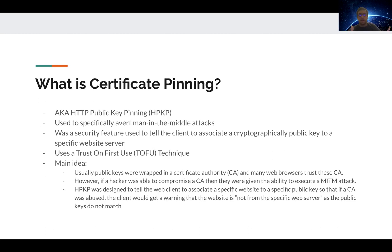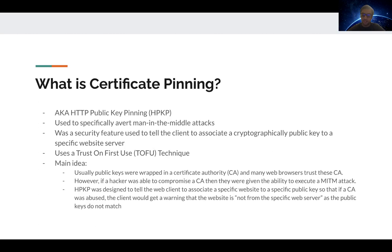The main idea behind certificate pinning is that public keys were wrapped in the certificate authority of the website. A certificate authority, or CA, is supposed to give you the secure system in HTTPS and tell the browser that this website content came from the actual server you requested it from. For example, Bank of America has its own CA, and when you request Bank of America's website, it returns the web content plus a CA, so the browser knows the content came from Bank of America's servers.